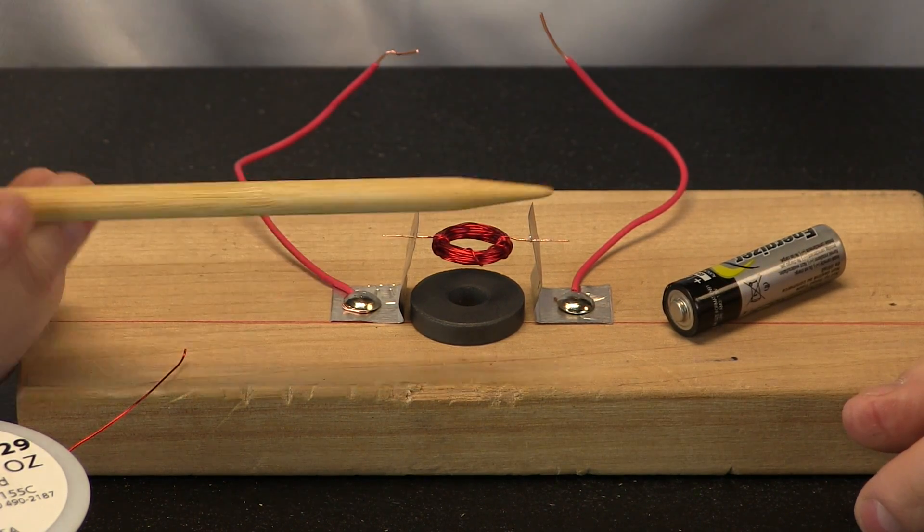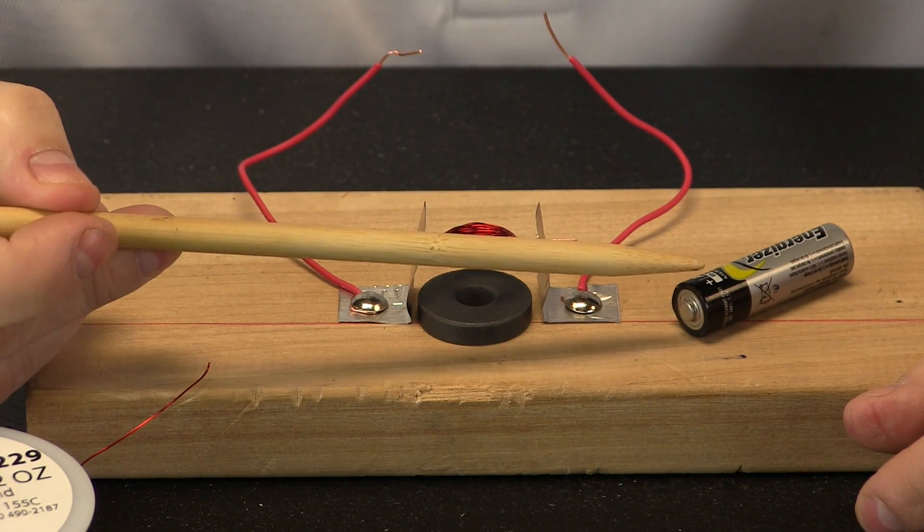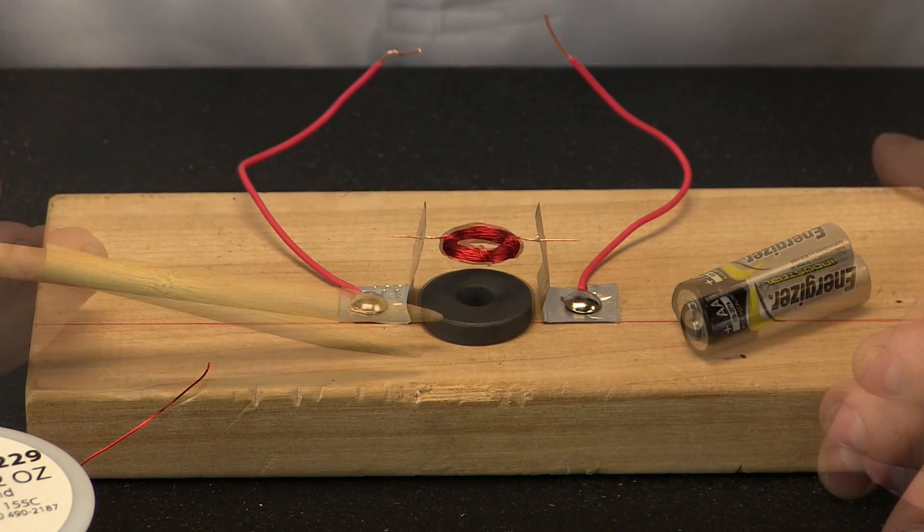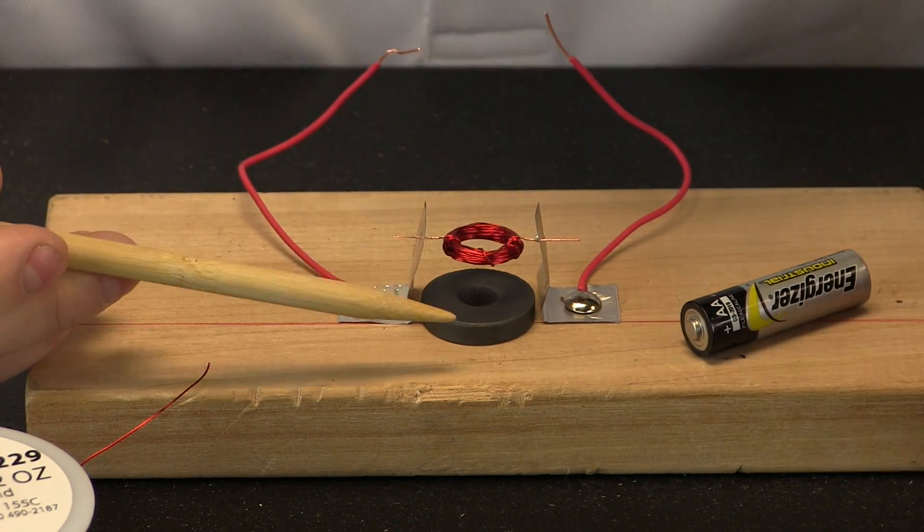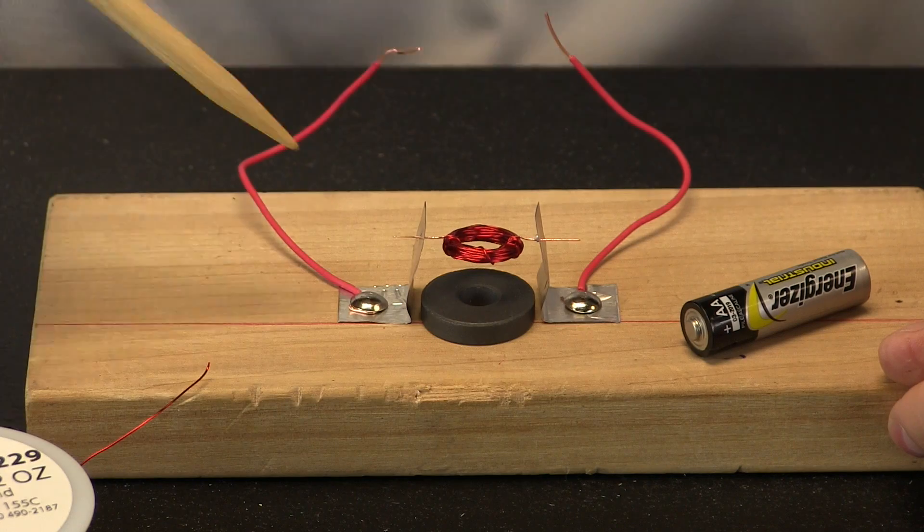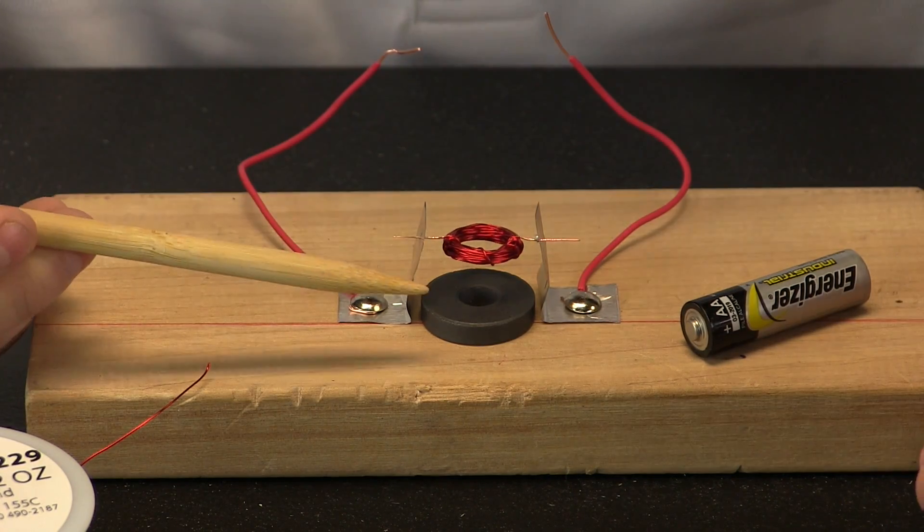Where does the electricity come from? Well that is where this battery comes in. But what is up with this magnet? Well the magnet has a force of its own. And Michael Faraday discovered that when electricity moves through wire that also creates a force.